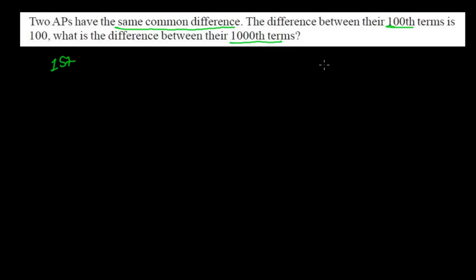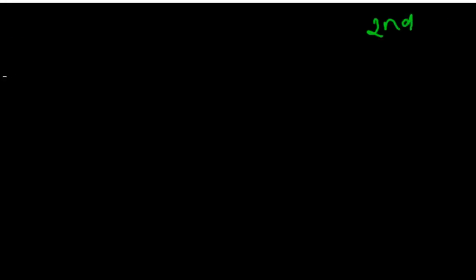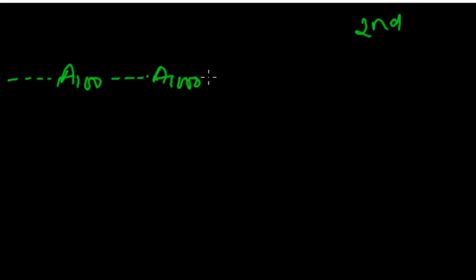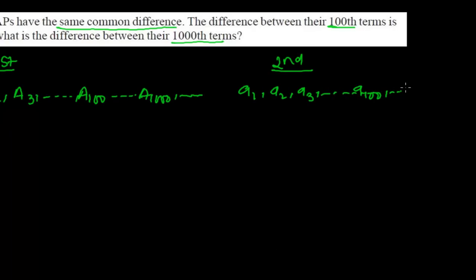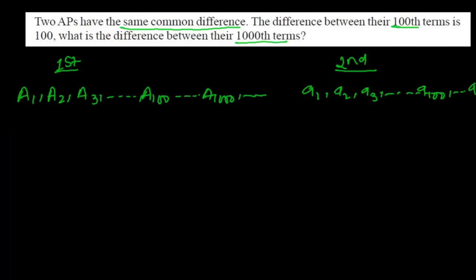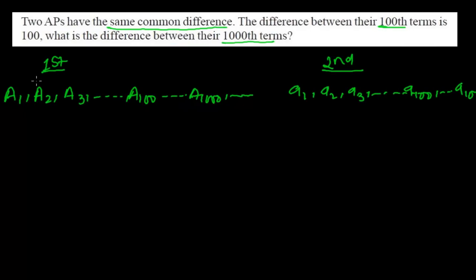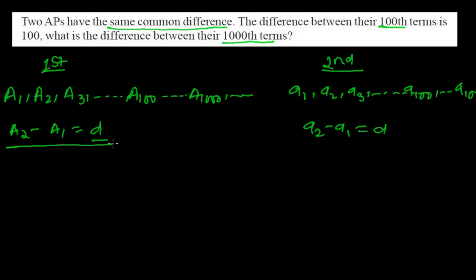This is the first AP: A1, A2, A3, and so on up to the hundredth term, then up to the thousandth term. And this is the second AP: A1', A2', A3', and so on, up to the hundredth term and then up to the thousandth term. The common difference is the same in both progressions — that is, A2 minus A1 equals D, and A2' minus A1' also equals D.